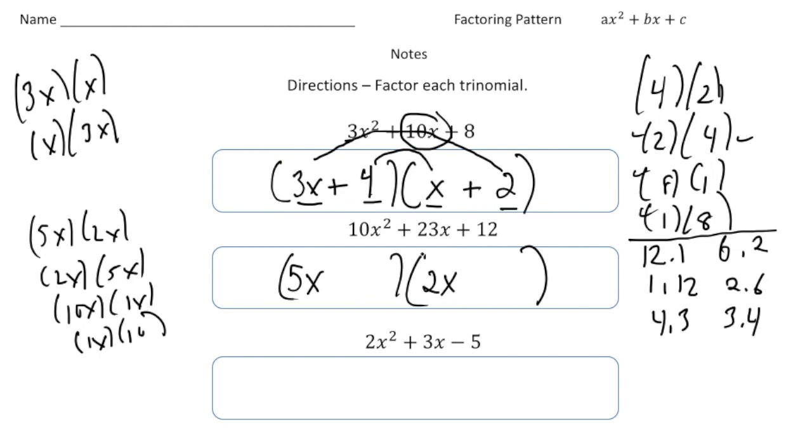So if I plug in a 12 and a 1, I can tell that's not going to work. It's not going to add up to 23. So I'm going to try one, say, I don't know, how about 4 and 3? So 4 and 3.